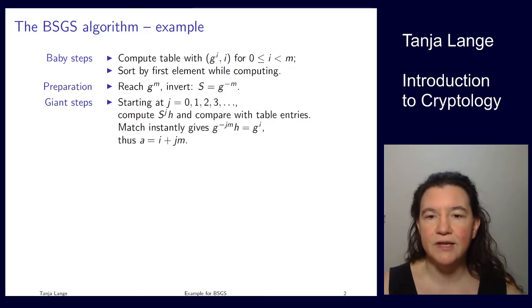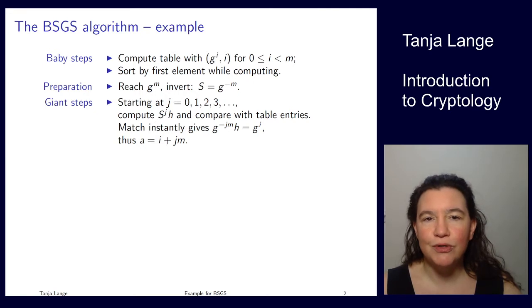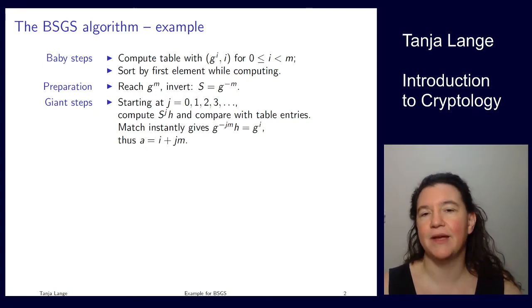This short video gives an example of how the baby step giant step algorithm is working. To fix notation, g is the generator of some group, and the order of g is about m squared, or put the other way around, m is defined as the square root of the order of g. That's typically not an integer, so we're rounding down.